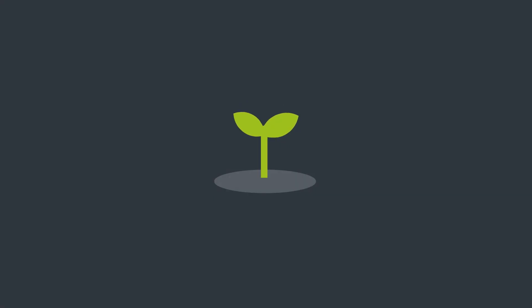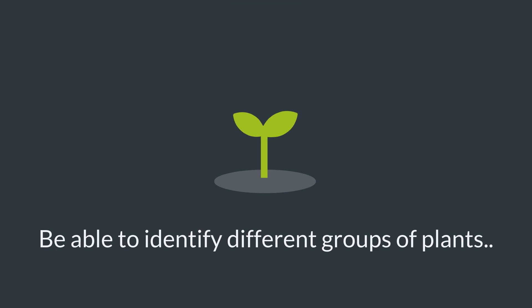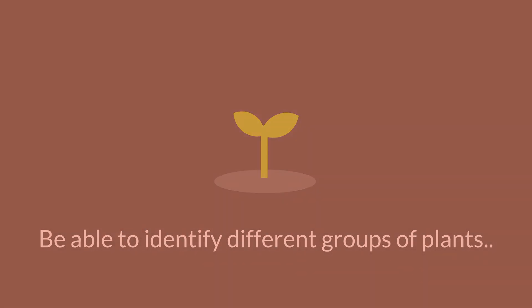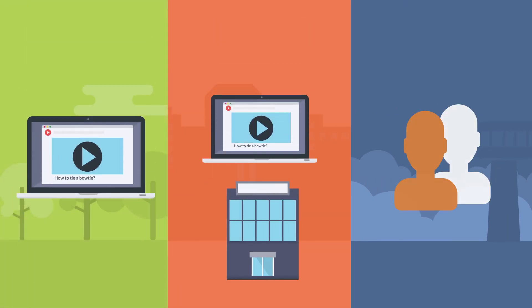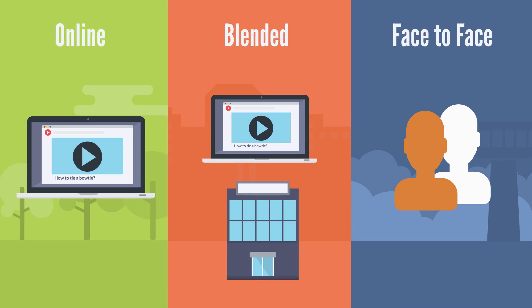We can apply a similar analogy when comparing different types of learning deliveries. For example, we would like our learners to be able to identify different groups of plants. That learning activity can in principle be delivered effectively using any kind of learning method — online, blended or face-to-face. What really makes a difference is what activities we use in the delivery.